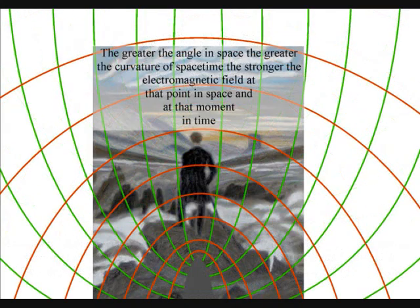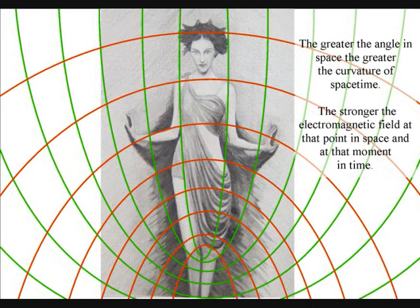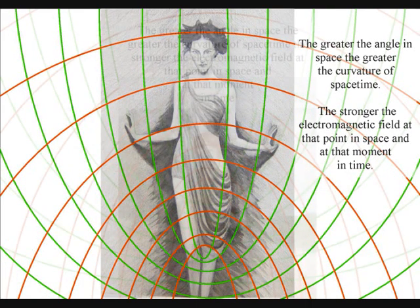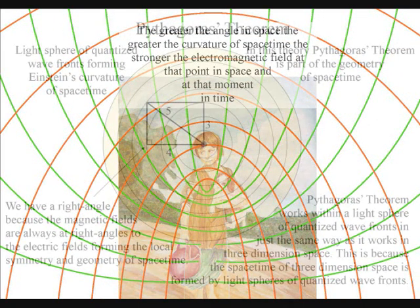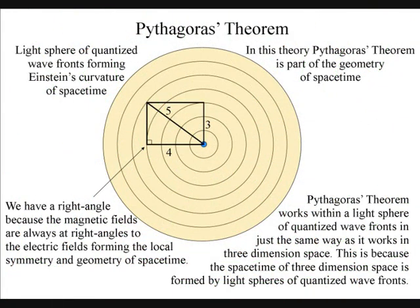The greater the angle in space, the greater the curvature of space-time, the stronger the electromagnetic field at that point in space and at that moment in time. The magnetic fields are always at right angles to the electric fields, forming the local space-time symmetry and geometry.